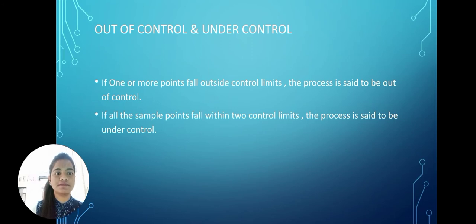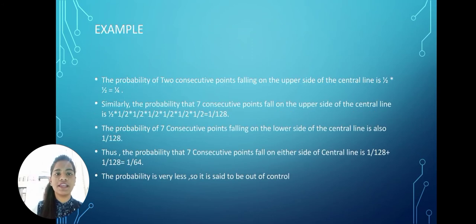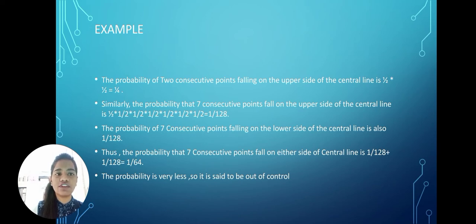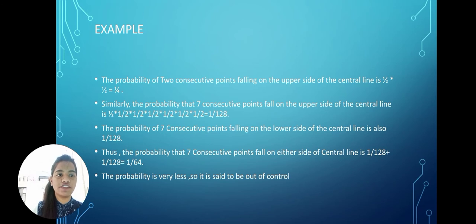The probability of two consecutive points falling on the upper side of the center line is 1/4. Similarly, if seven consecutive points fall on the upper side of the center line, that probability is 1/128. And if seven consecutive points fall on the lower side of the center line, the probability is also 1/128.